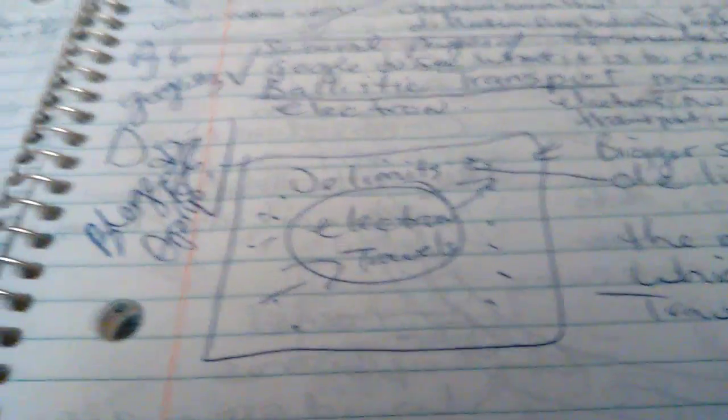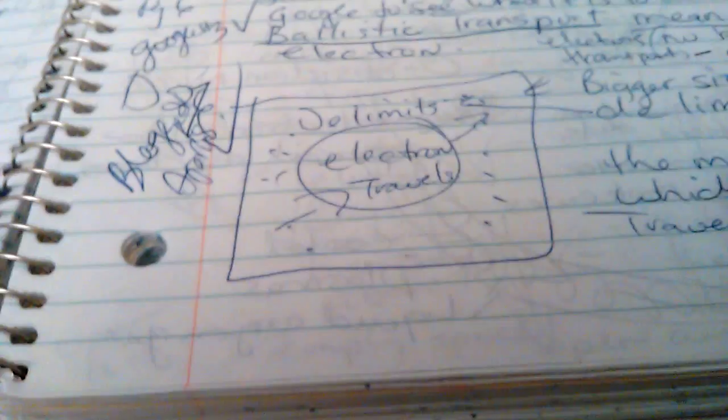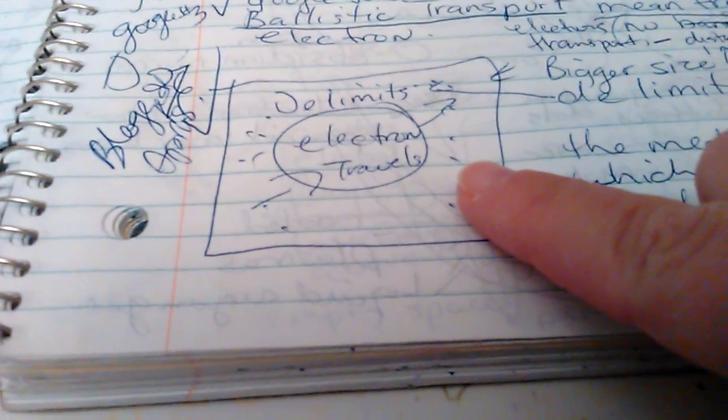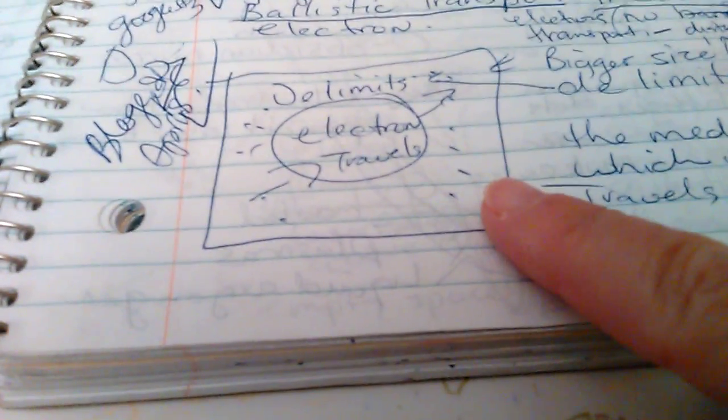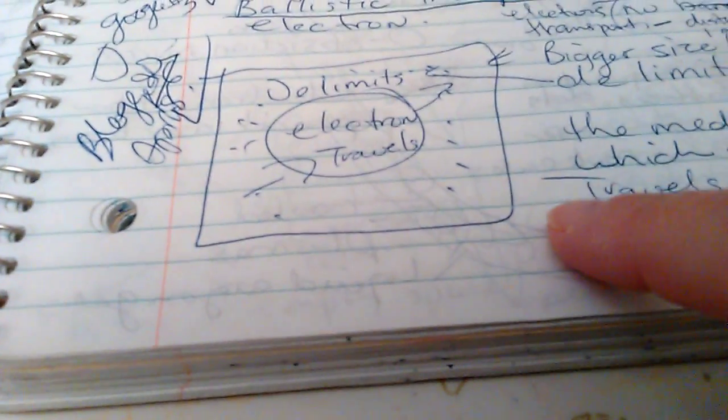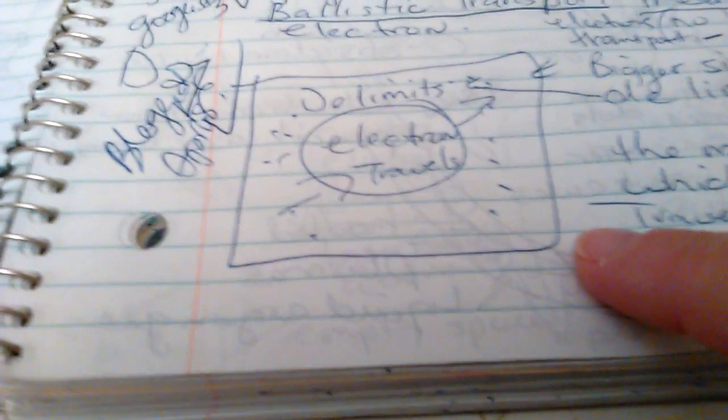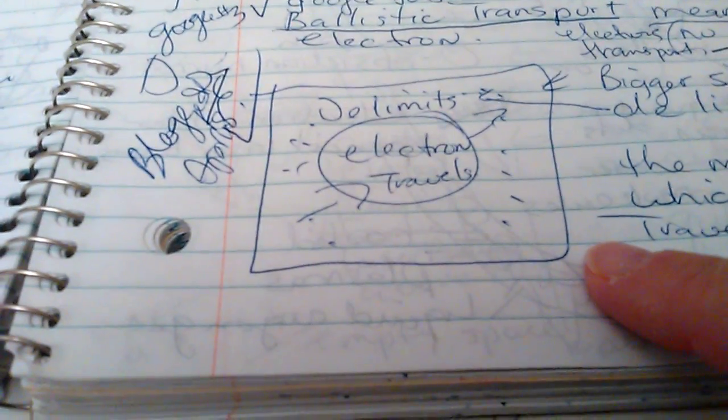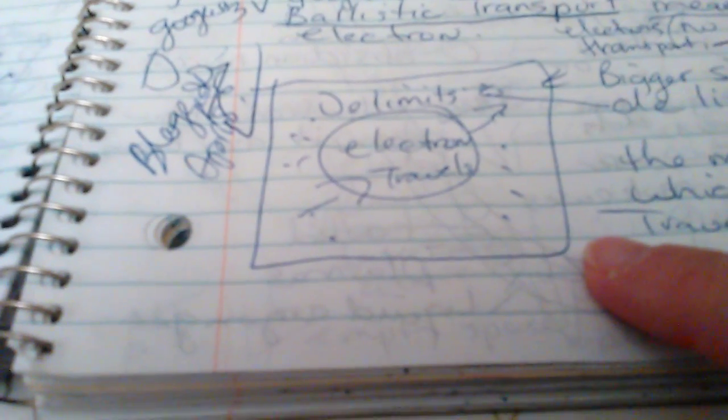This shows the delimits and the electron traveling in between them. These are the delimits, and this is the electron traveling in between them. This bigger box contains the delimits and the medium through which the electron travels. This represents ballistic transport — the mean free path of the electron.